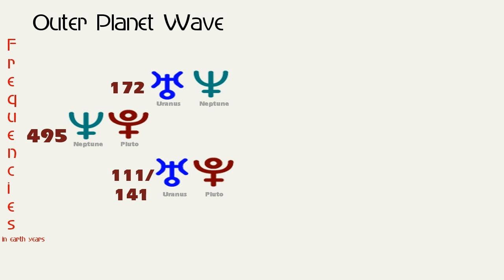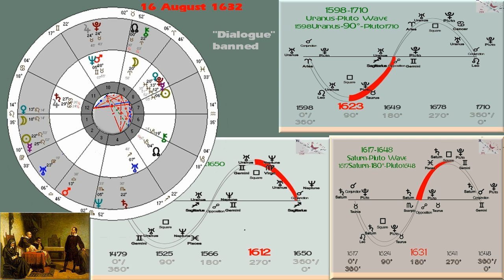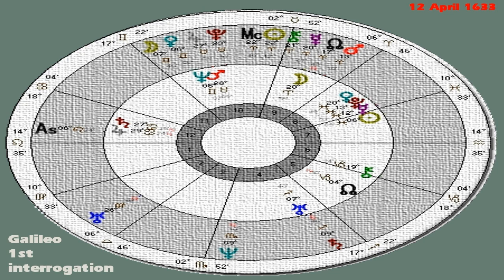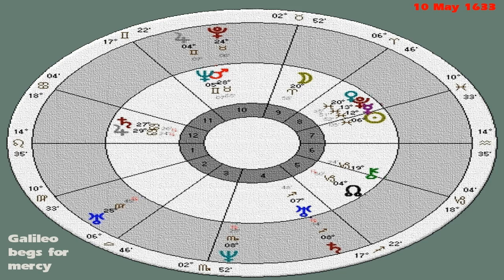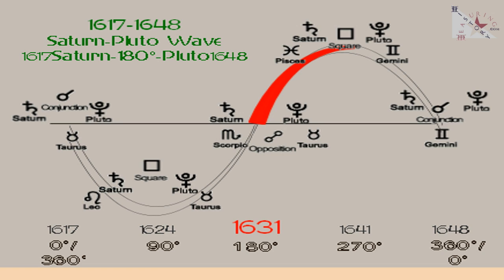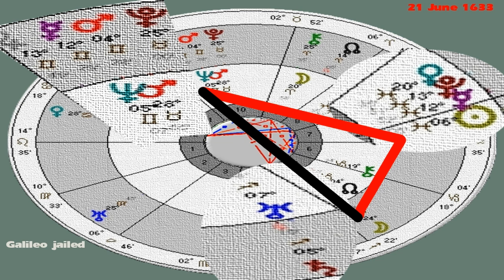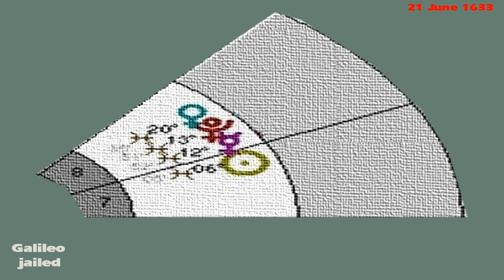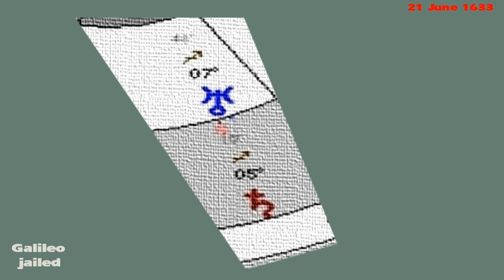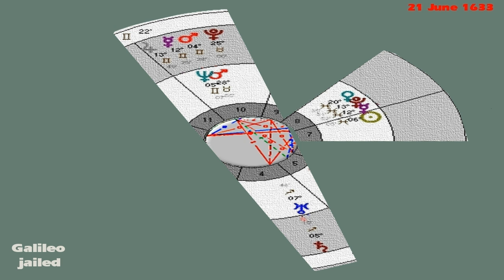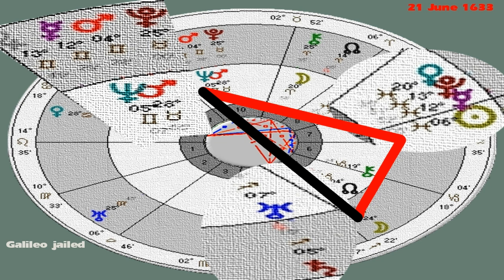From the time Galileo was summoned to Rome through his trial, Saturn opposite Pluto is the dominant transit, showing up clearly in his chart. At the trial, two stelliums square each other: the stellium in Galileo's natal chart — Sun, Mercury, Pluto, and Venus — being squared by transiting Pluto, Mars, Mercury, and Jupiter. That square also interacts with the Saturn transit, which highlights Uranus in his natal chart. The Saturn-Uranus conjunction is square those four planets in Pisces, and opposite Mars and Neptune.